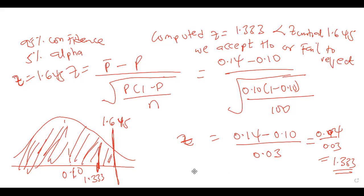Hypothesis testing is one of the simplest things you can do, especially using the z-value approach. Just compute the z-value and compare it to the critical z-value. Once you know whether it is less than or greater than the critical value, you know your conclusion based on your diagram.